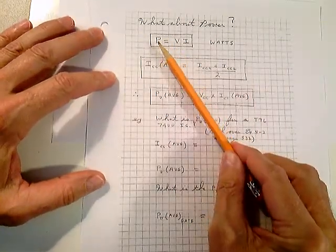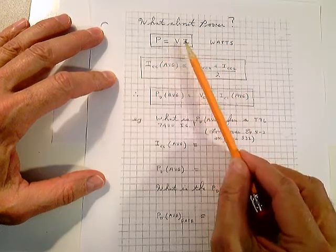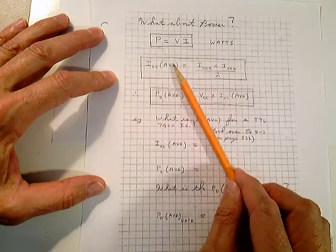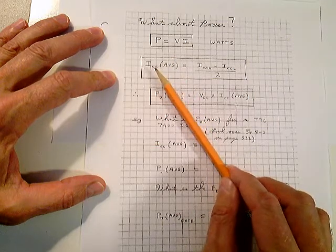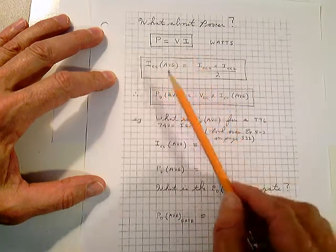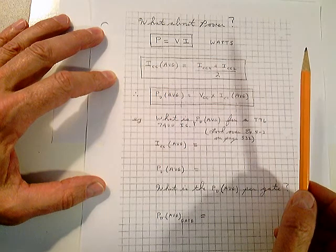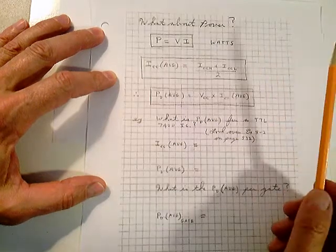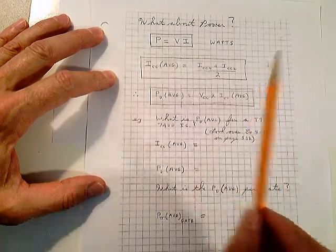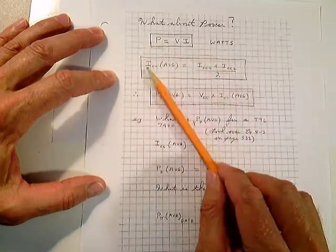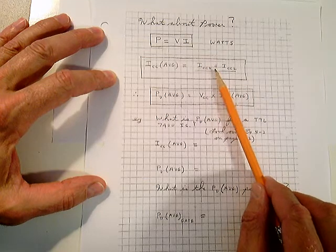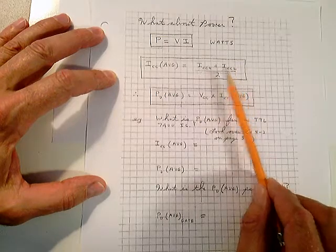We know the power law. Maybe you had this in physics. The power in watts is equal to the voltage times the current. That's a very important equation in electrical engineering. We can define ICC average, and that's the average collector current in these integrated circuits. If you know VCC goes to the collector indirectly of all the transistors in the IC package. We can calculate current ICC average as ICC in the high state plus ICC in the low state, you get these from the specs, divided by 2.